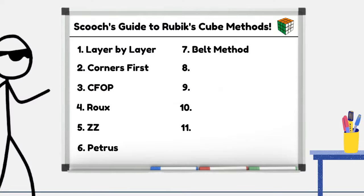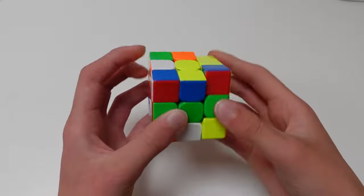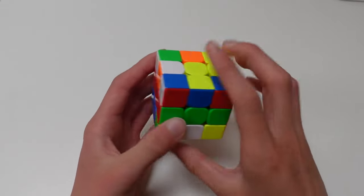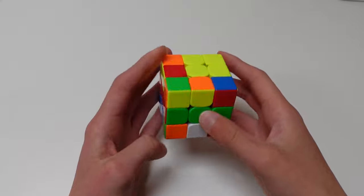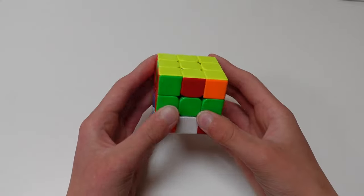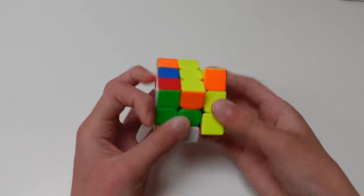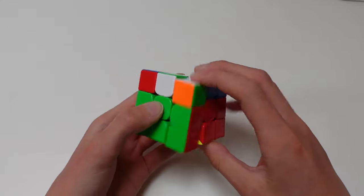Number 7, the belt method. In the belt method, you solve the middle layer first, making what's called a belt. Then, you separate the pieces into the sides they go on. Then, you do OLL and PLL on one side, turn the cube upside down, and do OLL and PLL on the other side.